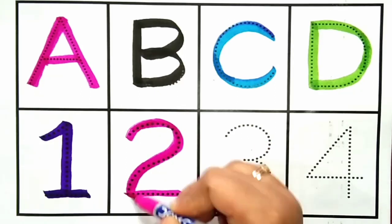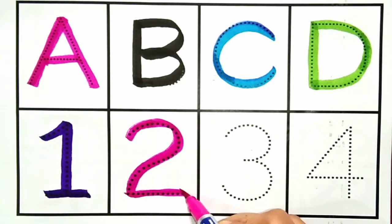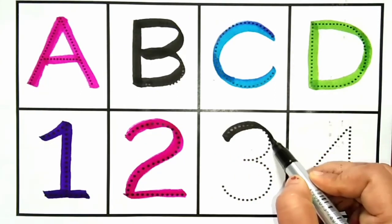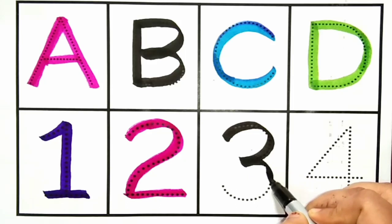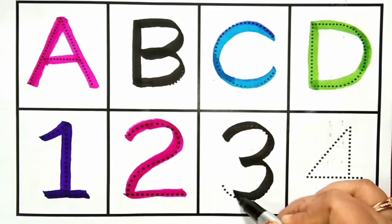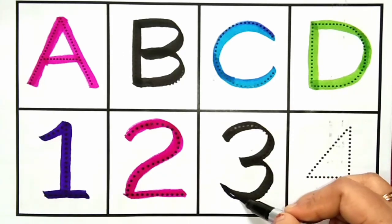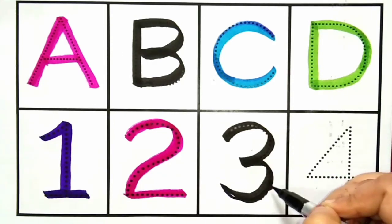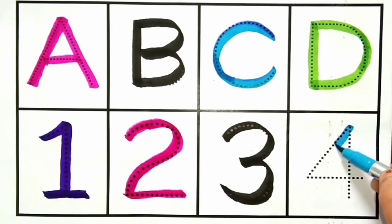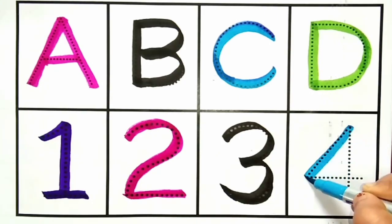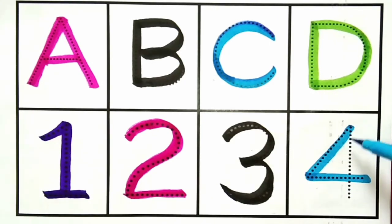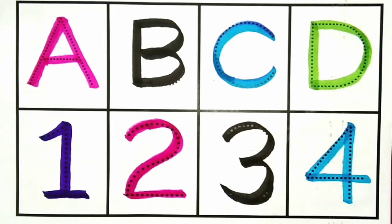This is number 2. 3, this is number 3. What is this? This is number 3. 4, this is number 4. What is this? This is number 4.